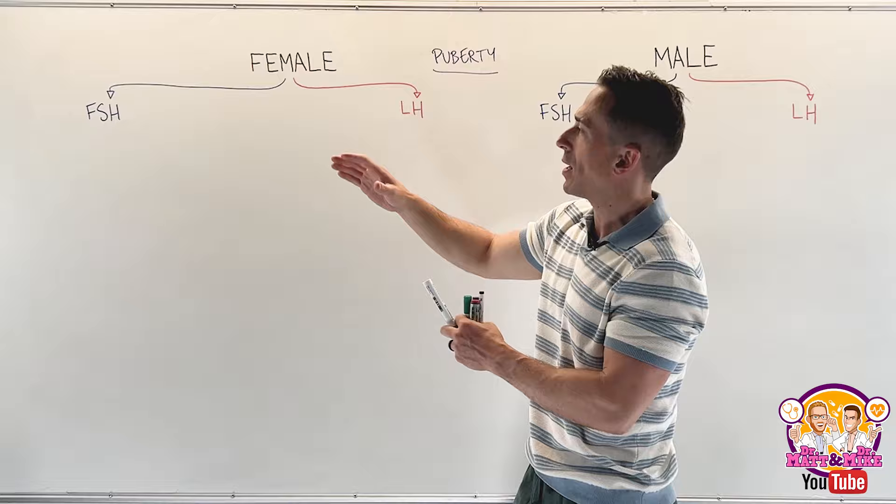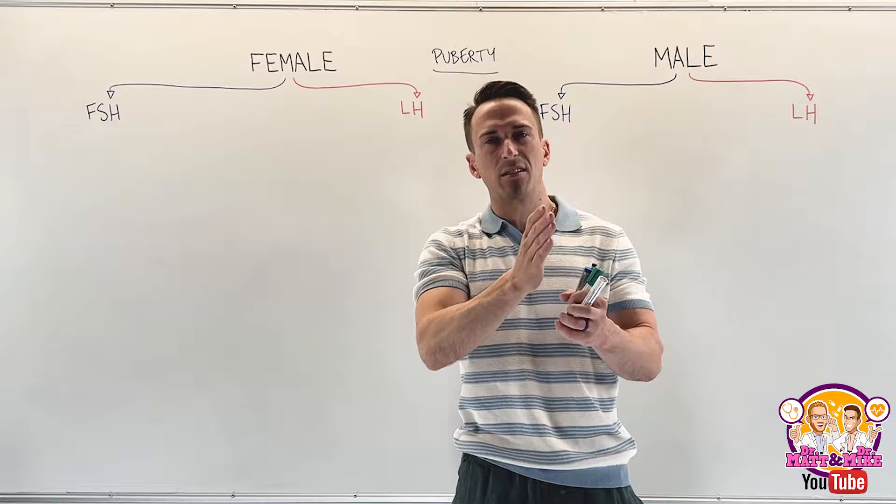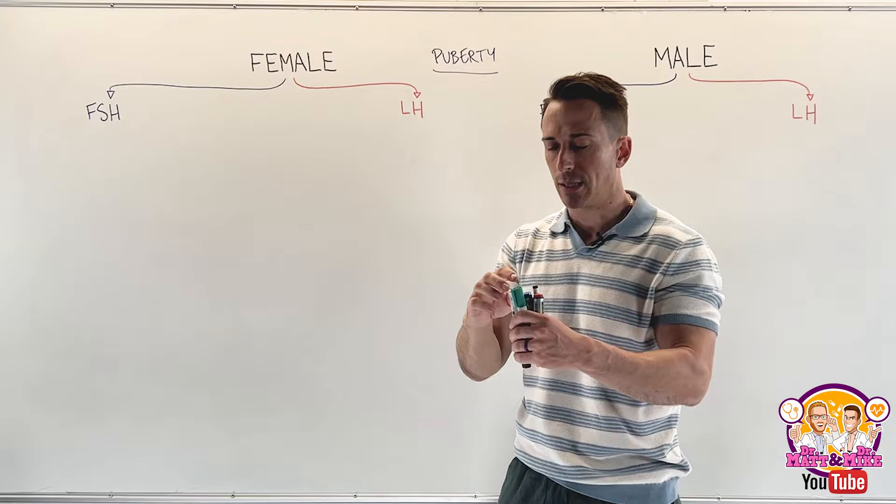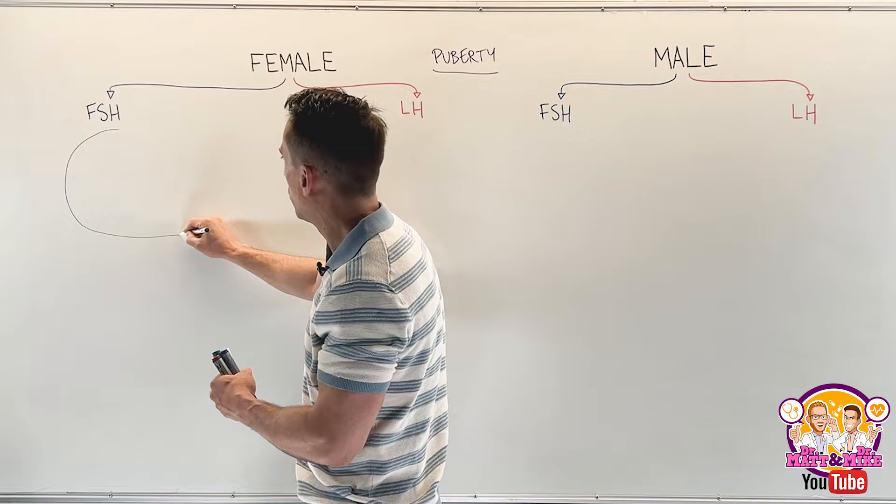When puberty hits — at around 8 to 13 years of age — that's when FSH and LH start to spike. But what's happening before that? Well, for the female reproductive cycle, quite a lot. Inside the ovary of a female, let's draw a big ovary up.